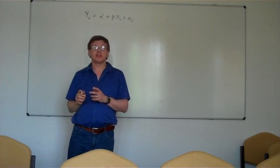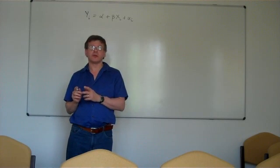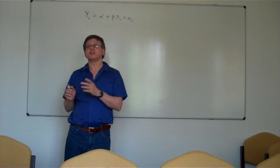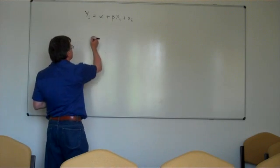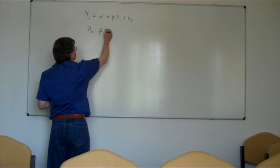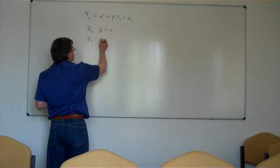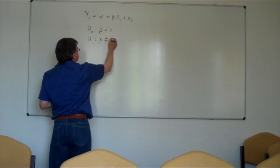And suppose we are asked to test the null hypothesis that the slope coefficient is equal to zero against the alternative that it's not equal to zero. That's a very common test. The null is beta equals zero. The alternative is beta is not equal to zero.